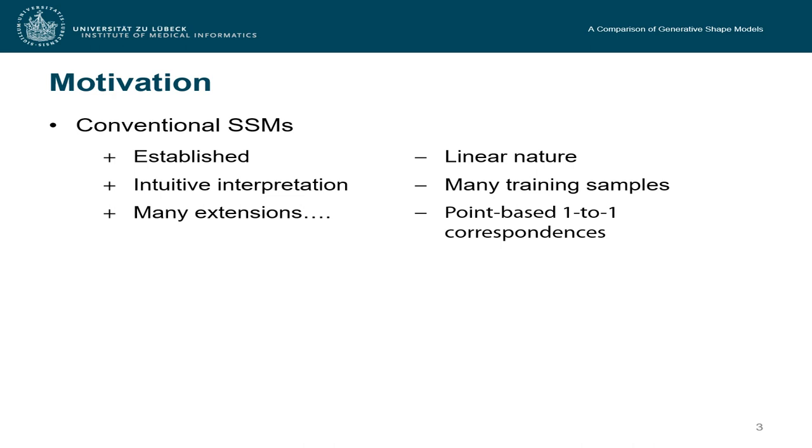However, they have a rather linear nature and also require many training samples. There are many extensions that try to deal with those issues and still the major problem that remains is that shape models require point-based one-to-one correspondences.